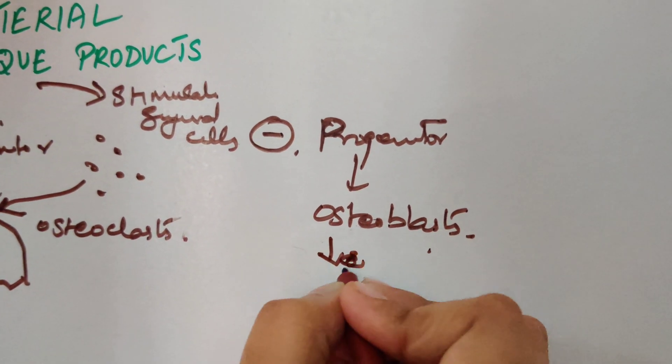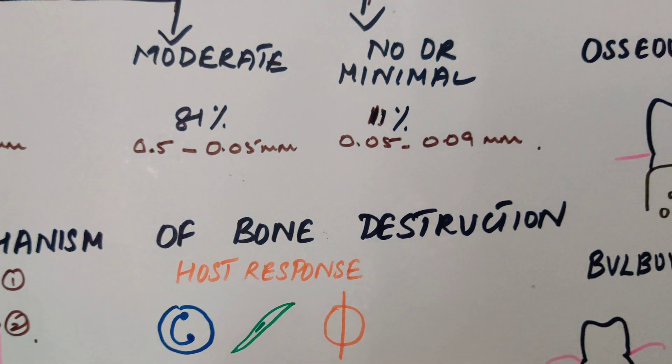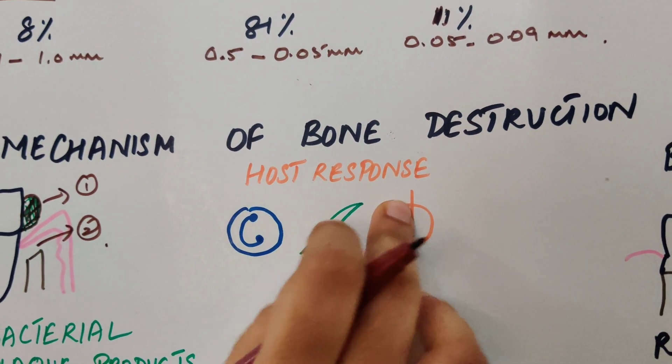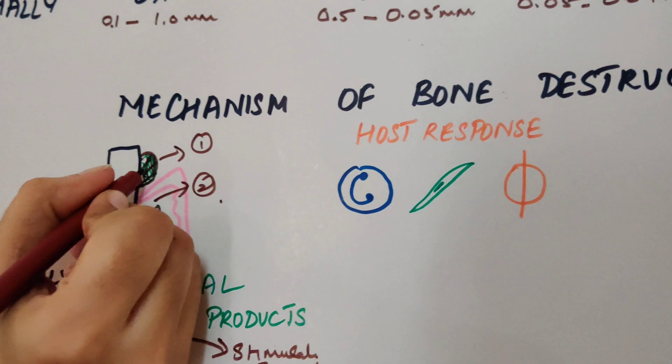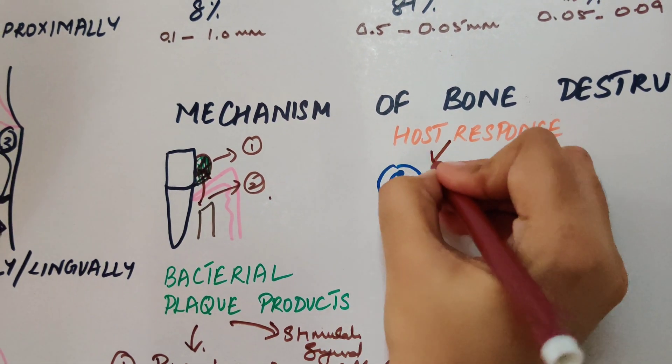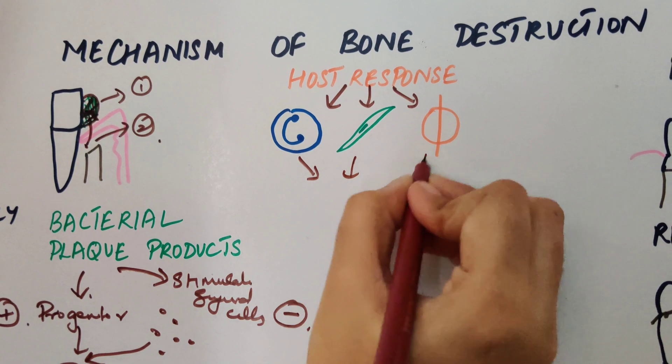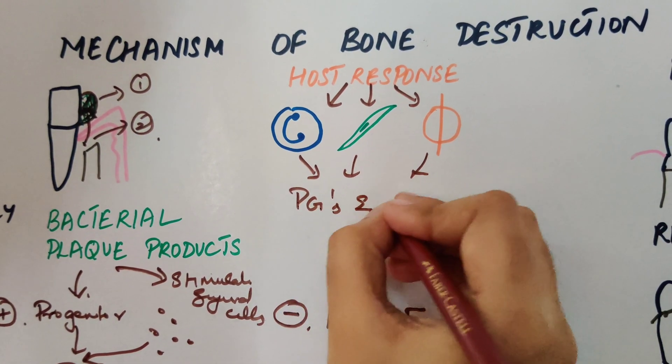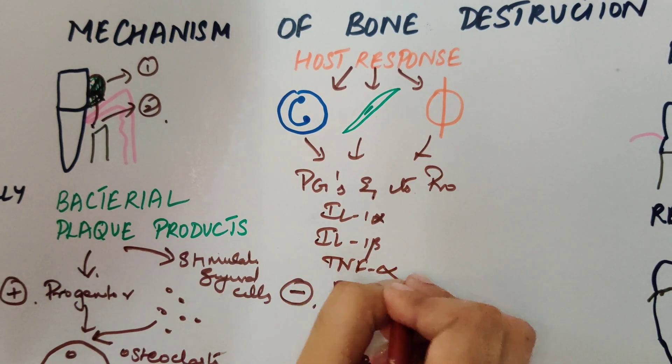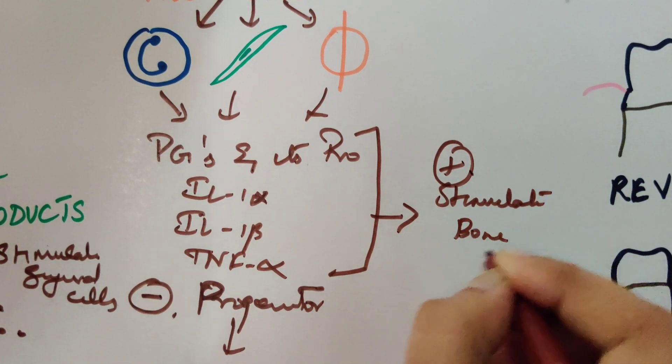Next coming to what is called host response. Now we have seen what bacterial plaque products can do. So now let's see what happens to host response. We all know that there is bacterial plaque here, and this is producing the host response. This host response is produced by our inflammatory cells like lymphocytes, fibroblasts, and macrophages. All these will produce what is called prostaglandins and its progenitors: IL-1 alpha, IL-1 beta, and TNF-alpha. All these factors will be produced which will in turn stimulate bone resorption.